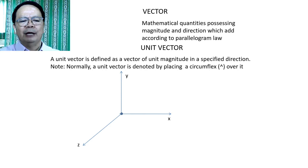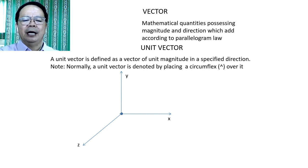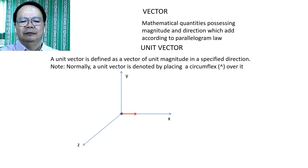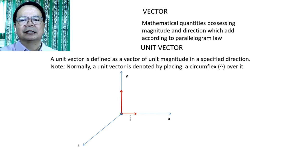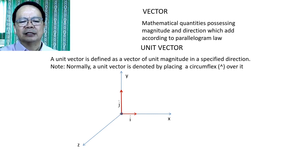Let us imagine that we have a space represented by x, y, and z axes. The direction of the positive x-axis can be denoted by a unit vector i. While the direction of the positive y-axis shall be denoted by a unit vector j.